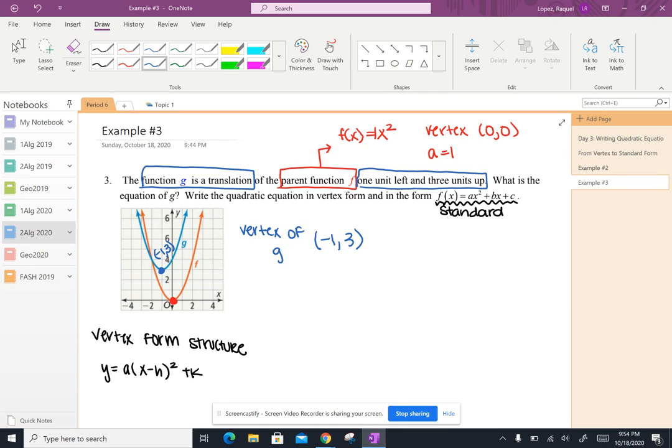Now we can go ahead and plug our vertex into the vertex form structure of our quadratic. So here's our structure. I've got y equals a(x minus h) squared plus k.